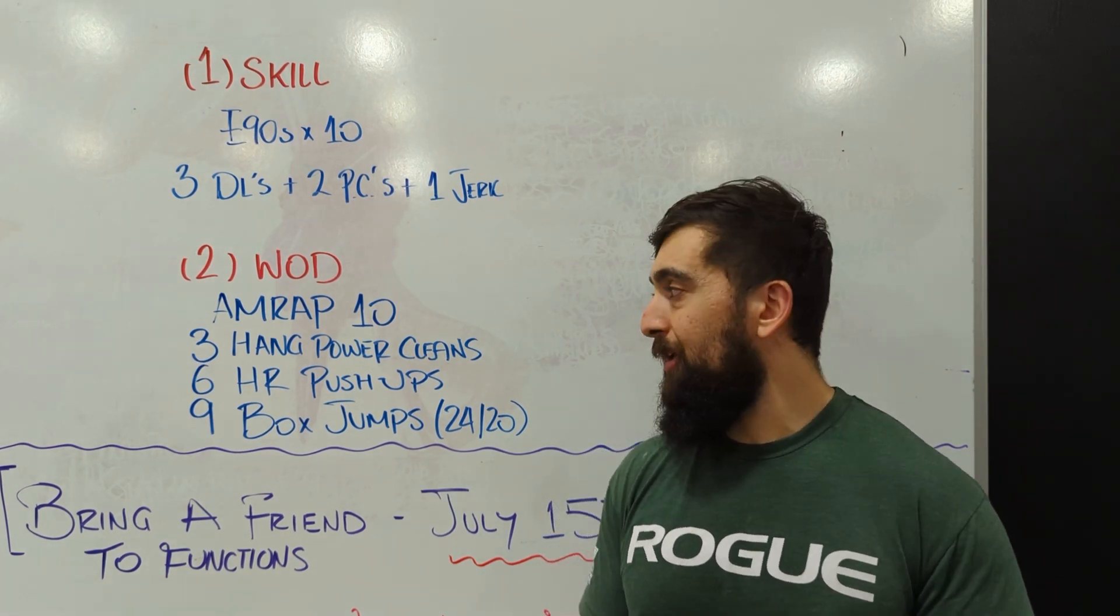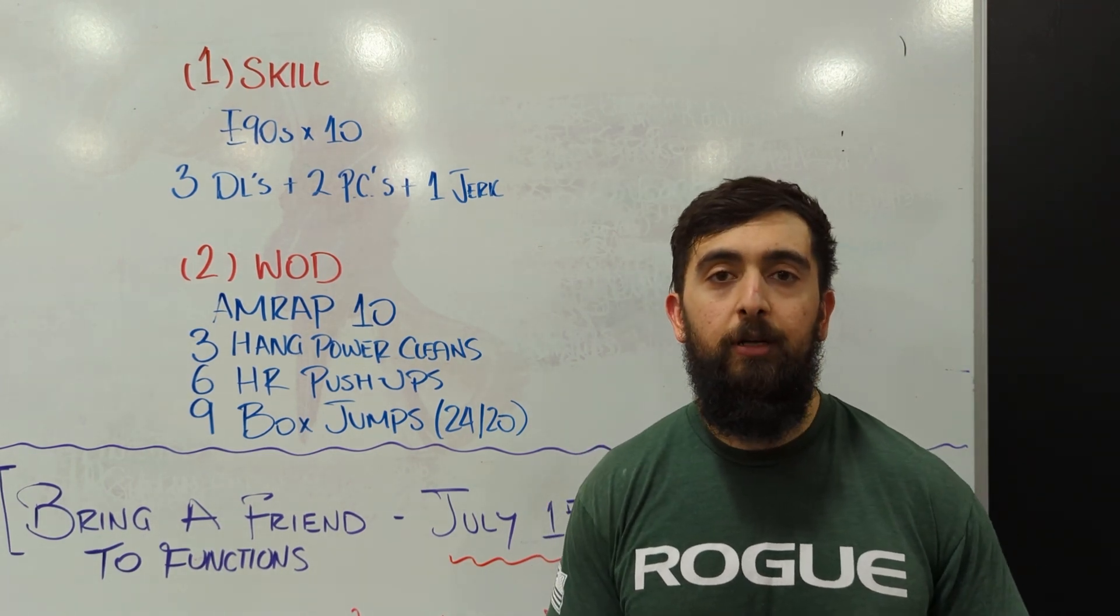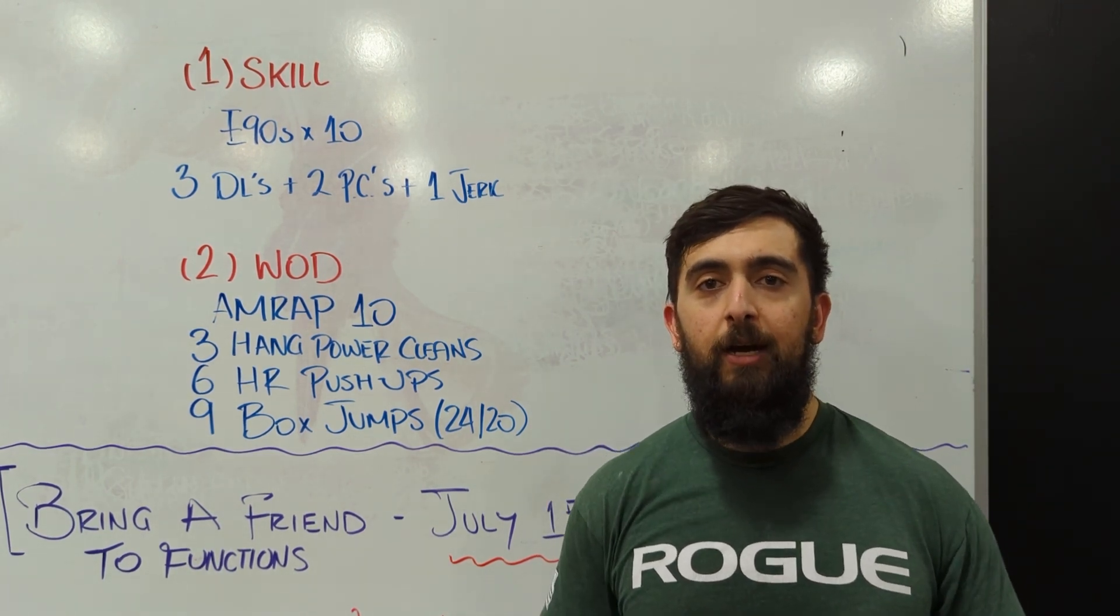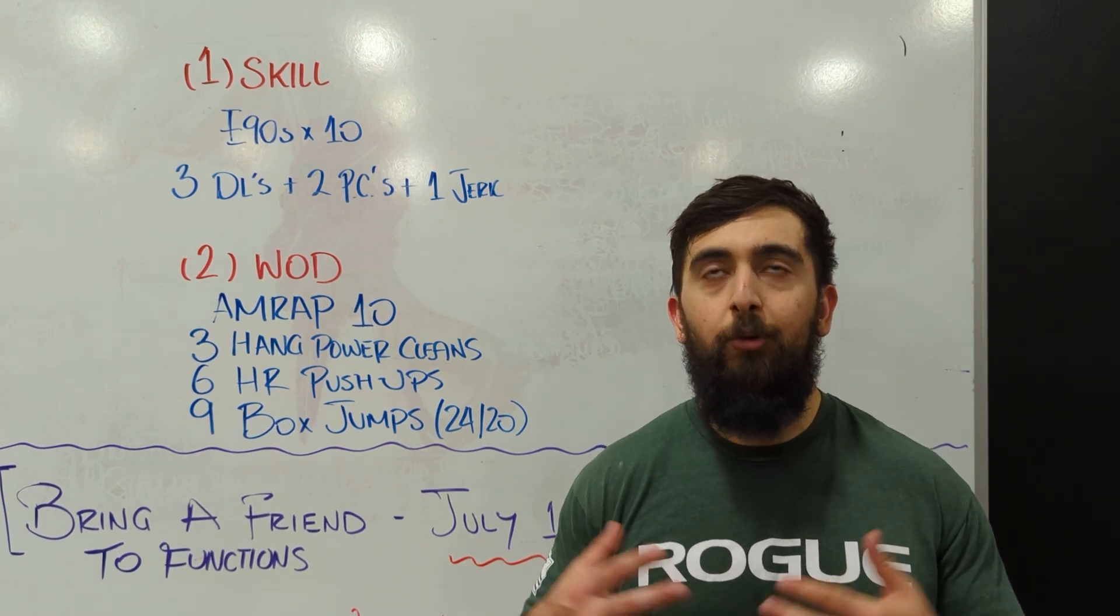Goal of this workout is to work on that strength with the hang power cleans and the hand release push-ups, and that box jump is going to get that heart rate up. So keep that intensity high in this workout to get the strength and that endurance portion of the workout.